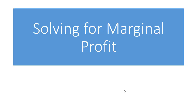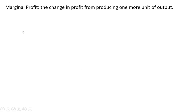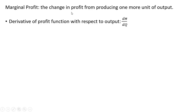In this video we're going to look at solving for marginal profit. Marginal profit is the change in profit from producing one more unit of output. It is a derivative concept — it is the derivative of the profit function with respect to output, where pi is the profit function and q is the quantity of output.